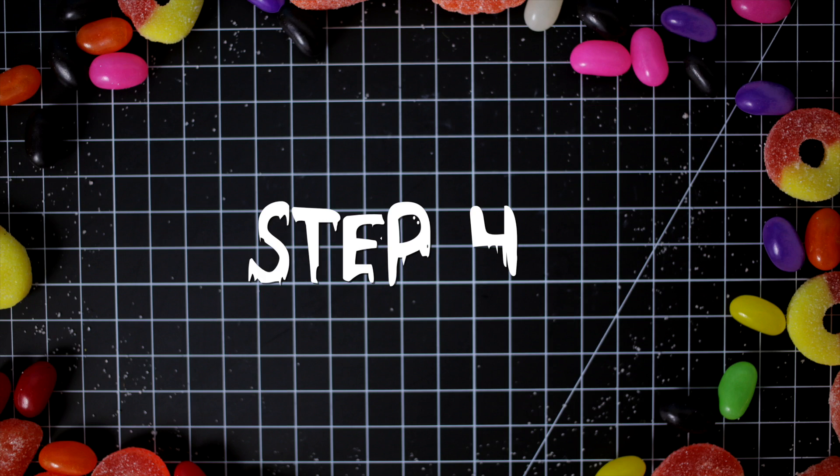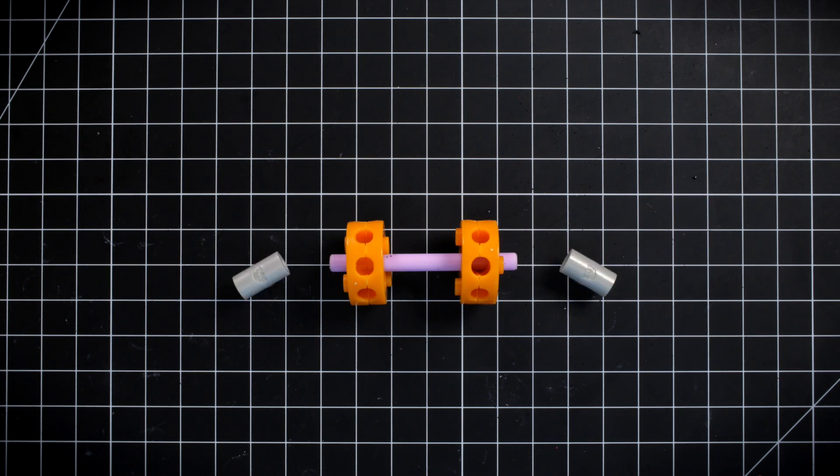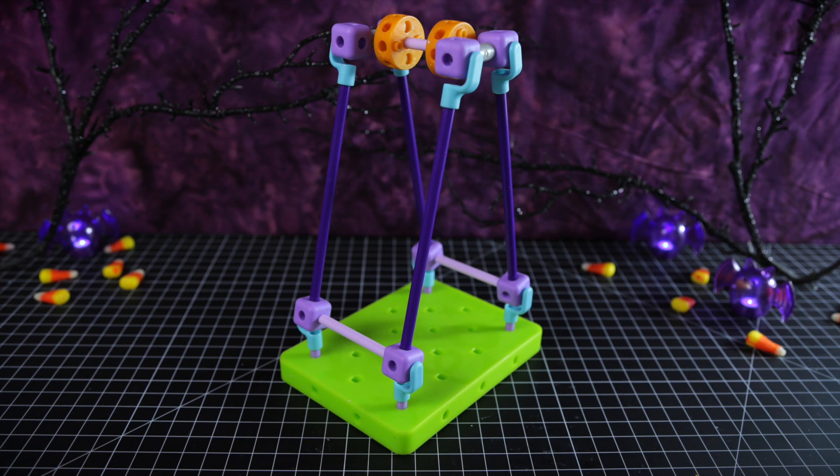Step four: Add two wheel hubs to a short axle. Then add two T-joints to the ends. Now connect the T-joints to the pegs at the top of your structure.